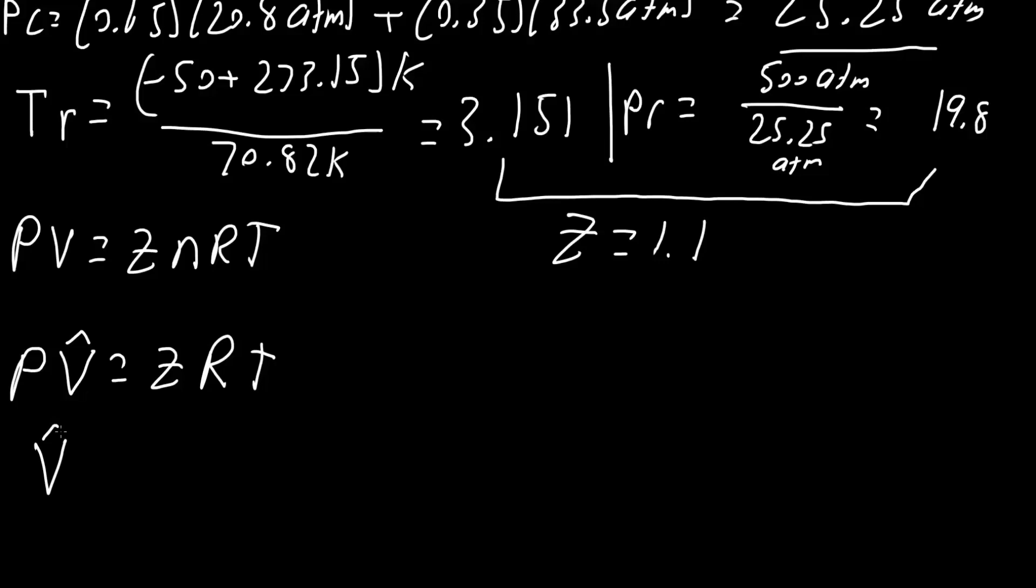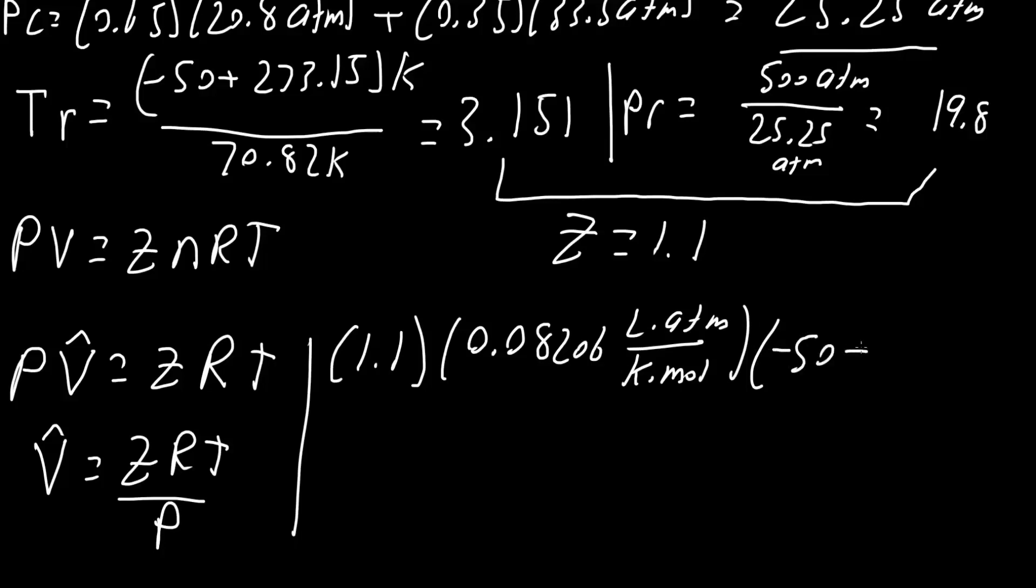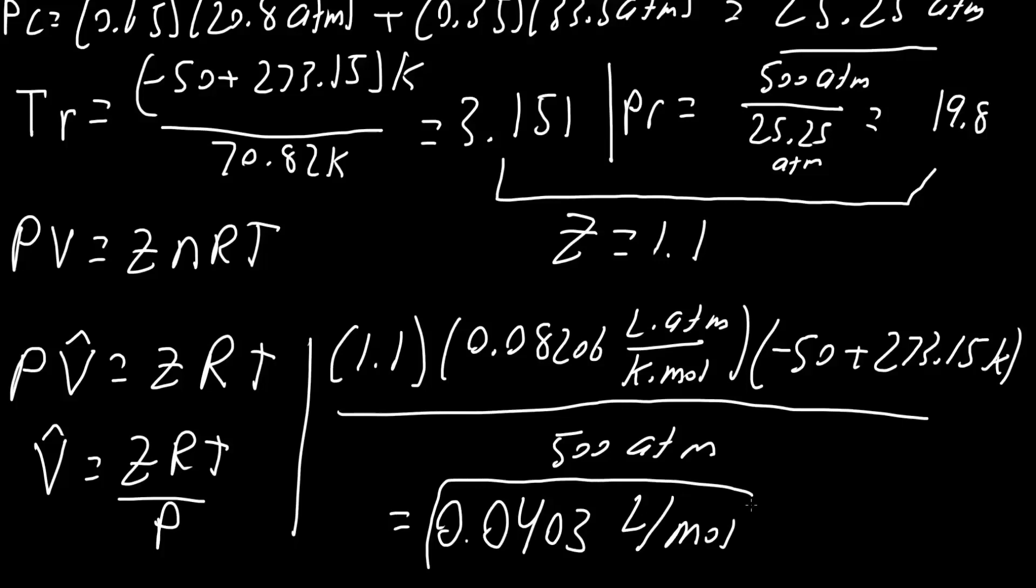So, we will say that V caret is equal to ZRT divided by P. We said now Z was 1.1. We got it from a compressibility chart. R was 0.08206 liters times atmosphere divided by K times mole. And temperature was negative 50 Celsius, but we want it in Kelvin, so this could cancel. So, negative 50 plus 273.15 K divided by pressure. Pressure was 500 atmosphere. Let's check the units. ATM cancels, Kelvin cancels, and we would be left off with liters over mole, which is what we want. And we would ultimately get 0.0403 liters per mole. And that is all that we need to do for this problem.